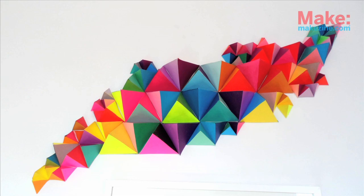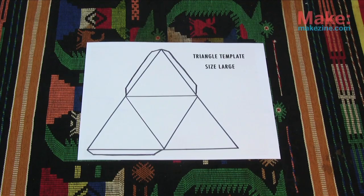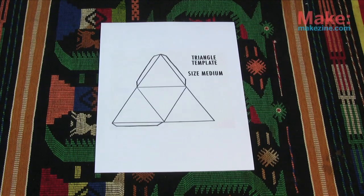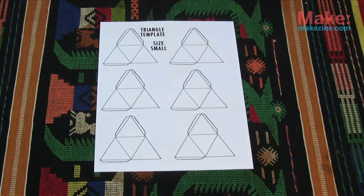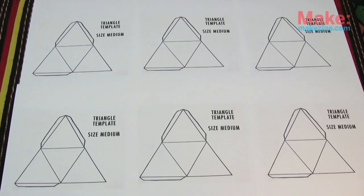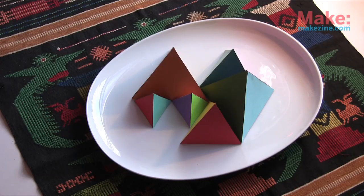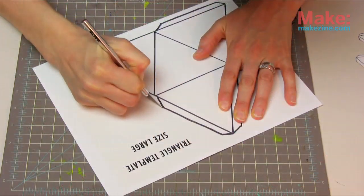To make your own 3D geometric wall sculpture, you'll need the templates I created found in the link in the description below. Print several of each template out on cardstock paper. I'm using white paper to later add a different color to each side of my triangles, but make them whatever color you want.